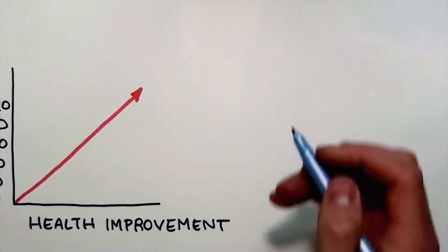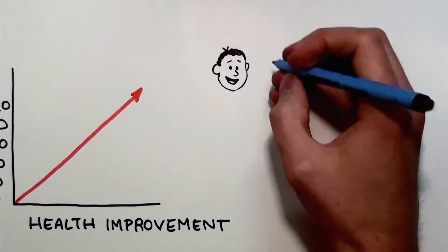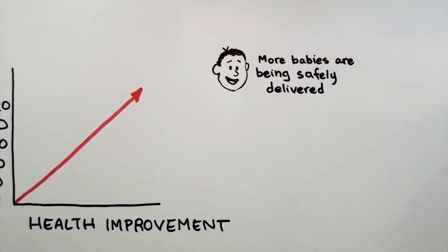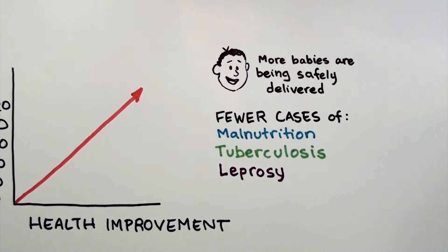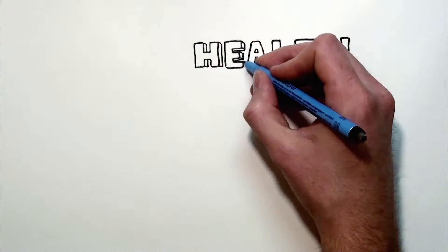For example, the infant mortality rate has dropped drastically, more babies are being safely delivered, and there are fewer cases of malnutrition, tuberculosis, and leprosy. The overall health of these communities is progressing rapidly.